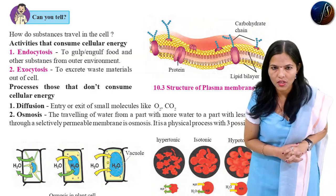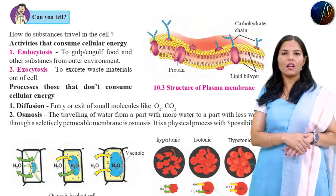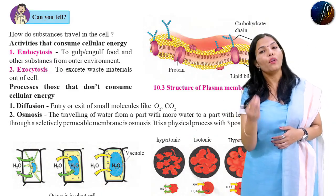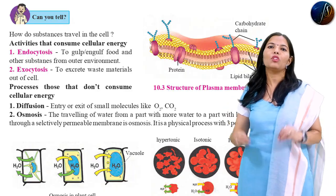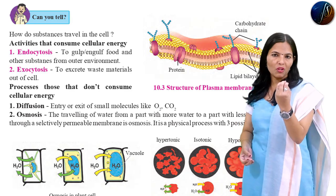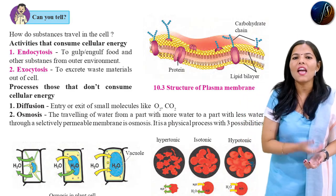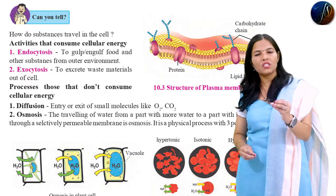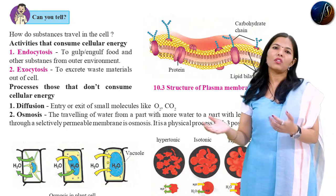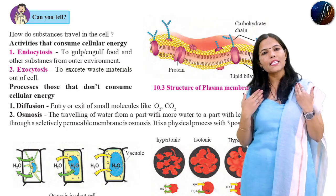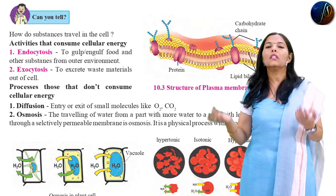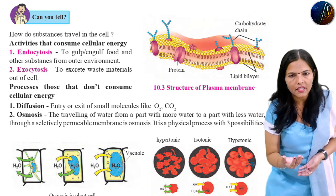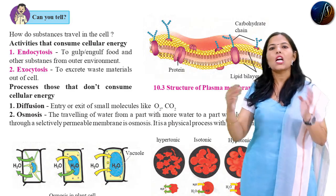This is the process that doesn't consume cellular energy. This is the process of diffusion and osmosis. So what is diffusion? Entry or exit of small molecules like oxygen and carbon dioxide is called diffusion. Entry of oxygen or exit of carbon dioxide — the entry and exit of small molecules of oxygen and carbon dioxide — is called diffusion.